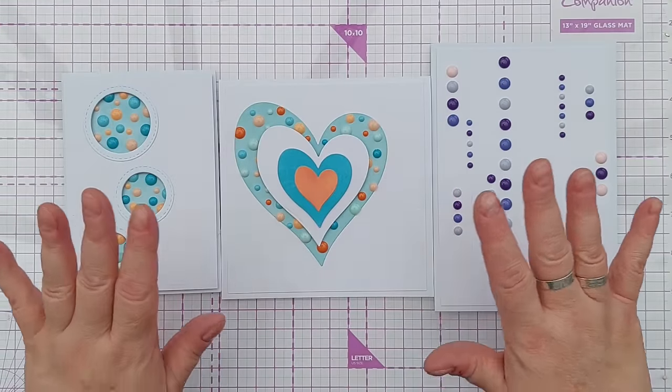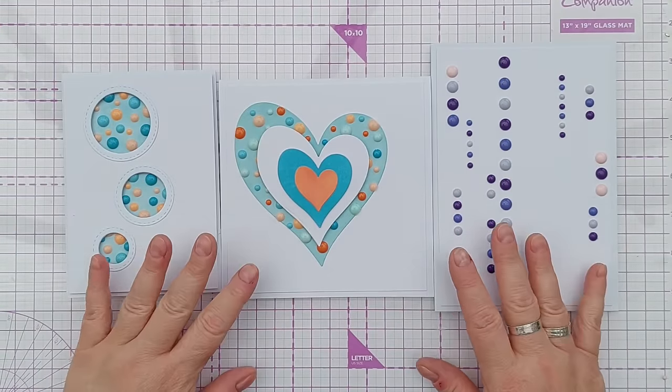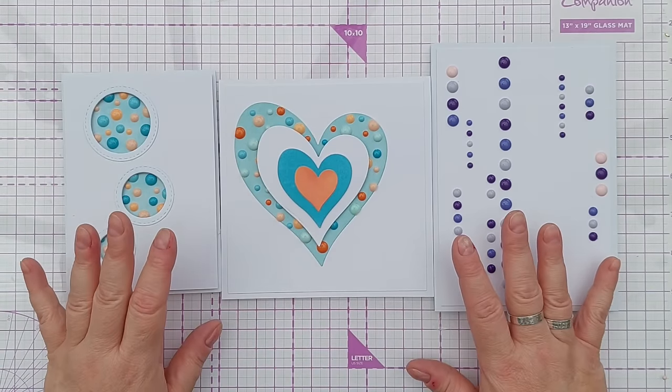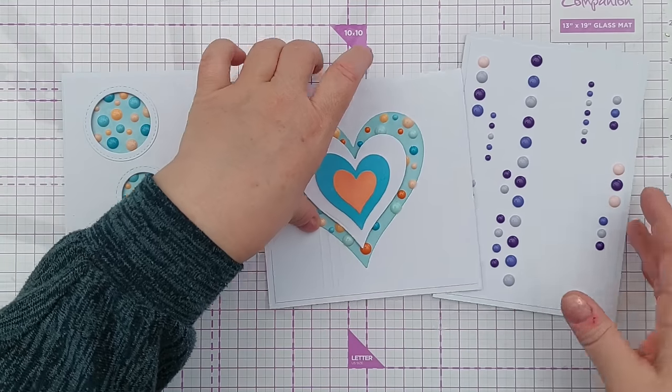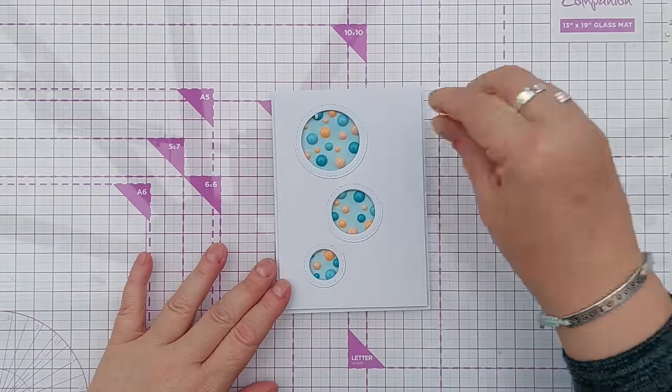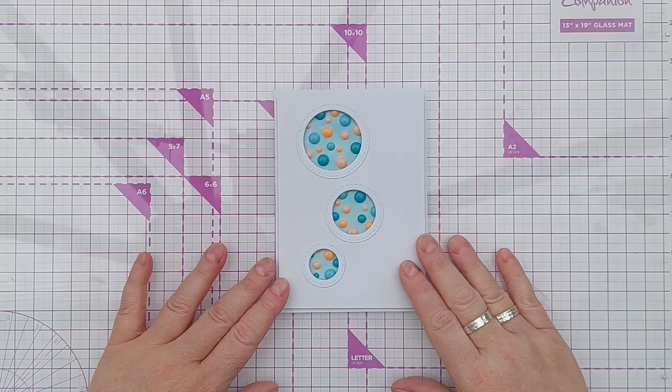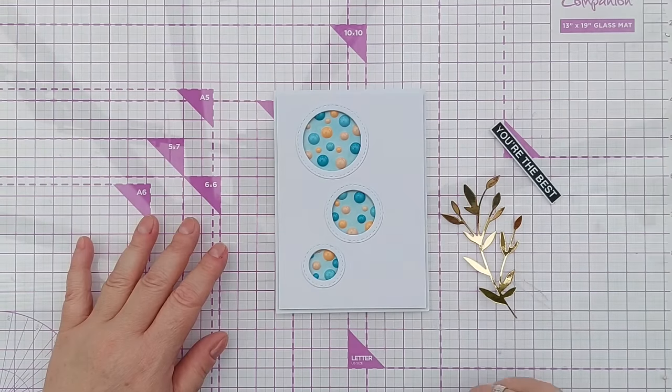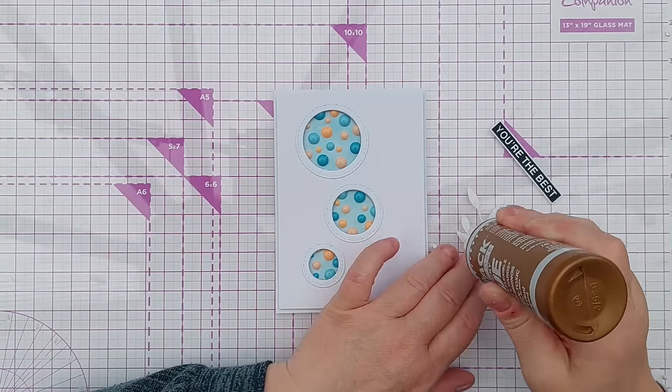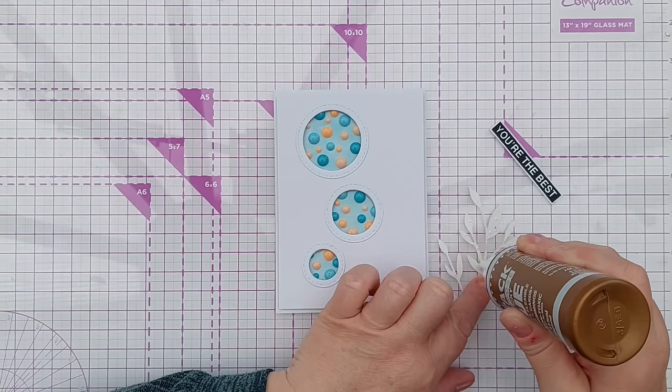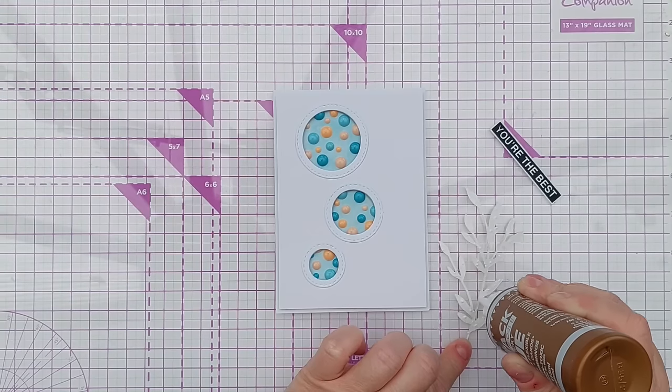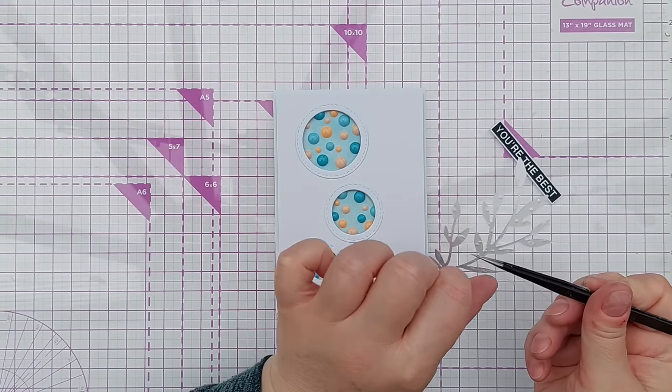So here we have our three bases—I guess you'd call them. They're not finished cards and I did manage to use up every single enamel dot apart from a couple that flew across the room. I showed this one to my daughter and she said it looks really good, it looks like bacteria growing in a petri dish. But I'm going to add just a couple things to the front to finish it off. I've got a gold leafy branch die cut from gold foil cardstock. I'll just add a little bit of high tack glue here and there and layer it over my petri dishes.